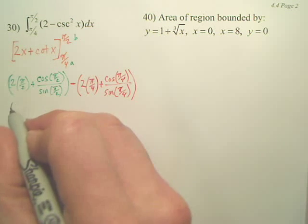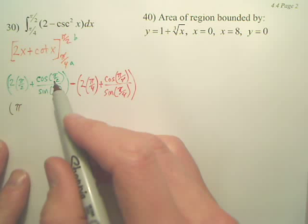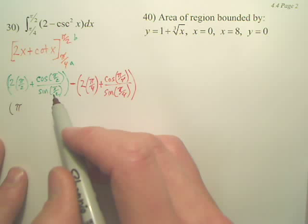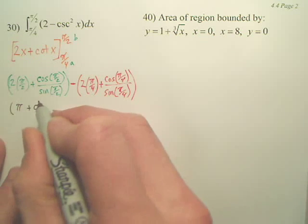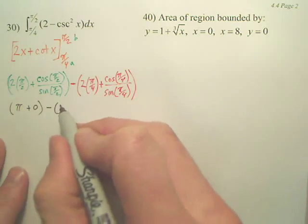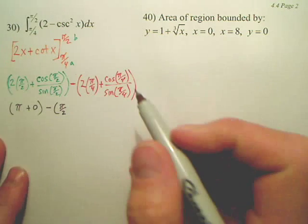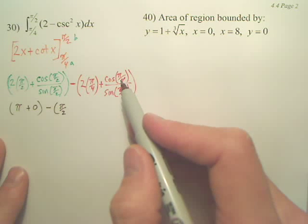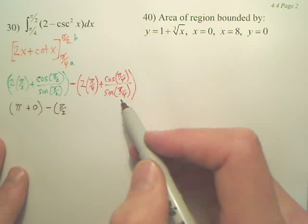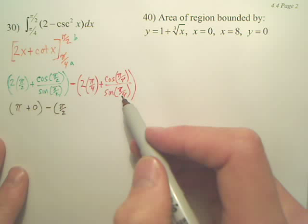This becomes pi. What's pi over 2? Cosine of pi/2 is 0, so that's 0 over 1, which is plus 0. Minus — isn't that going to be pi over 2? And with pi/4, isn't that going to be 1? Isn't that square root 2 over 2, divided by square root 2 over 2, which is 1.